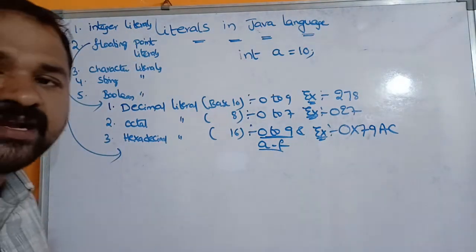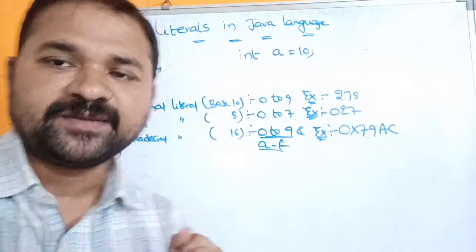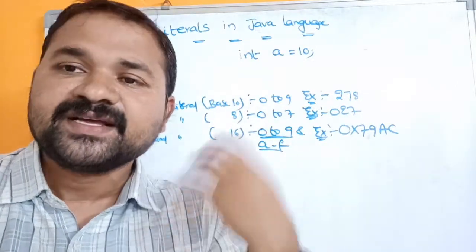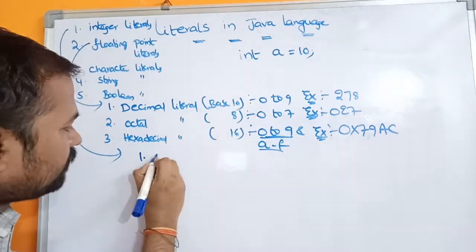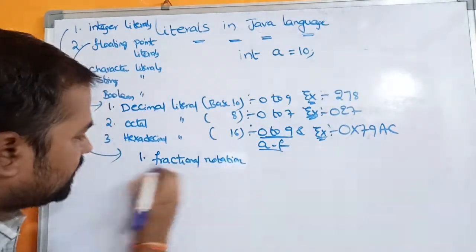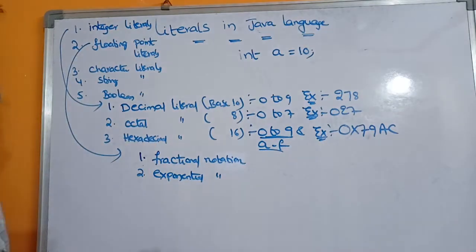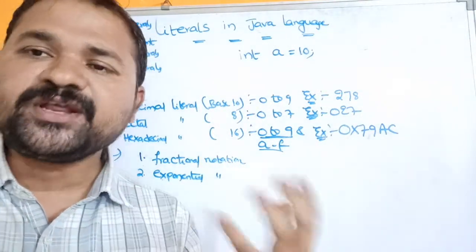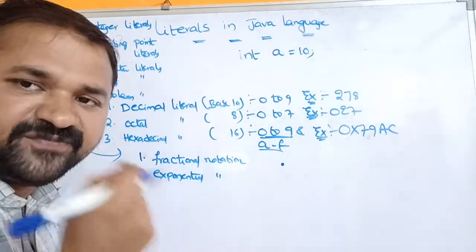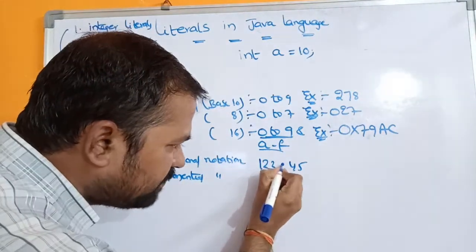The second type is floating point literal, which is used to store a floating point number. We can represent a floating point number in two ways: the first is fractional notation and the second is exponential notation. In fractional notation, a floating point number must contain a decimal point, for example 143.45, with at least one digit before and after the decimal point.